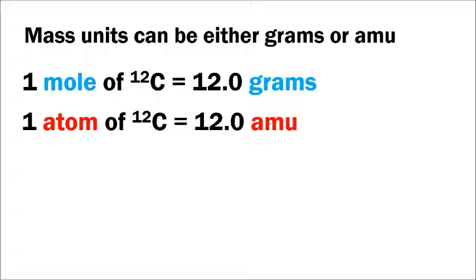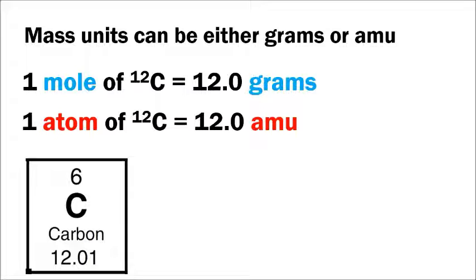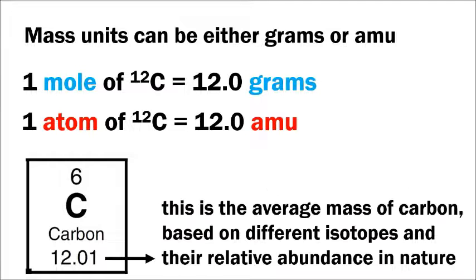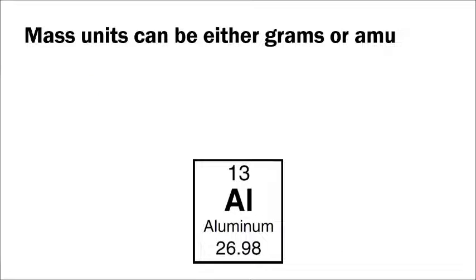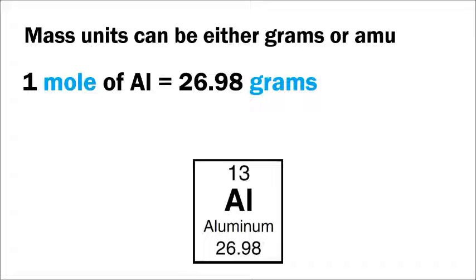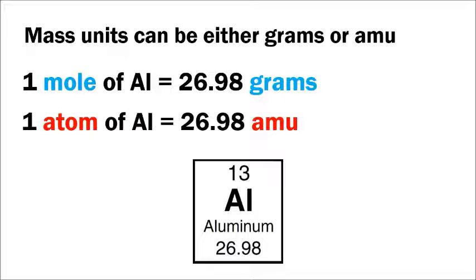On the periodic table, carbon shows an atomic mass of 12.01, not exactly 12. That's because there are different isotopes of carbon — such as carbon-12 and carbon-13 — and the number on the periodic table represents the average mass of all isotopes based on their relative abundance in nature. For example, one mole of aluminum has a mass of 26.98 grams, and a single atom of aluminum has a mass of 26.98 AMUs. When discussing moles, mass is in grams; when discussing individual particles, mass is in AMUs.